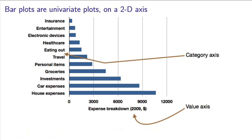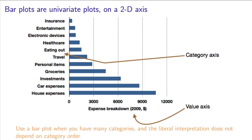The interpretation of the bar plot does not change if the category axis is reordered. However, to assist your reader, you should always show the category axis in an order that best conveys your message.